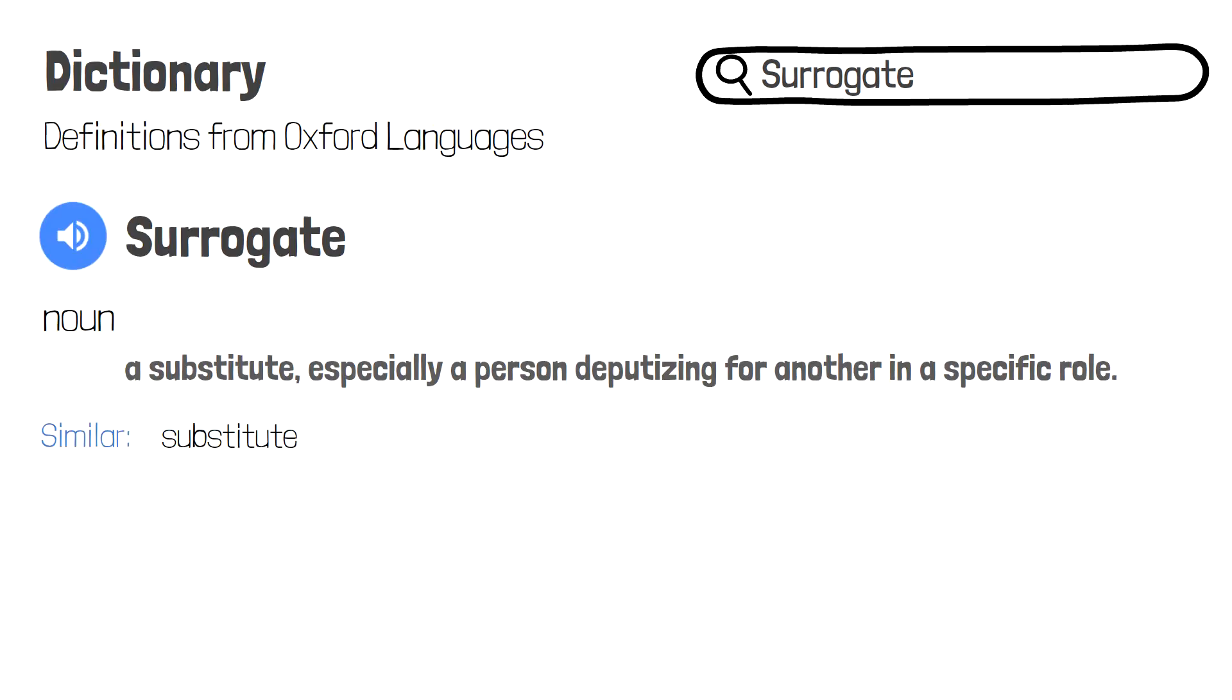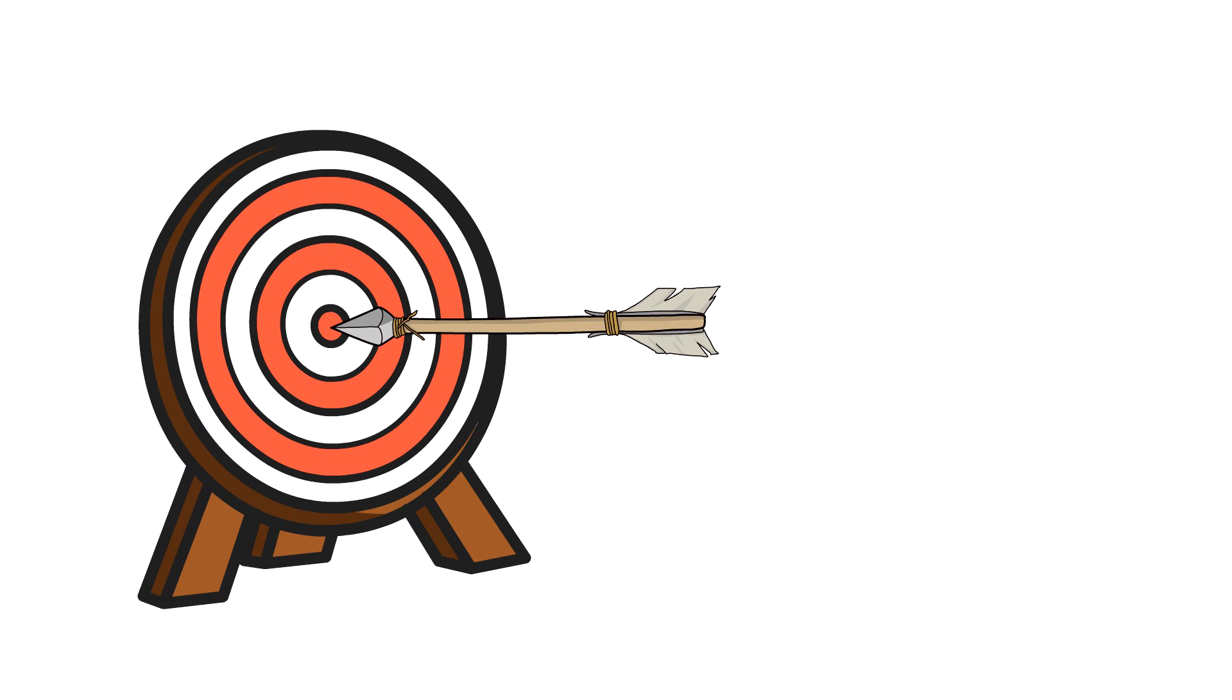In a clinical trial, a surrogate outcome may be used to replace the measurement of main interest and relevance to participants, clinicians, and other stakeholders. The surrogate outcome is a substitute for the real target outcome.